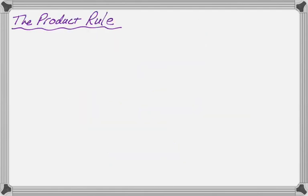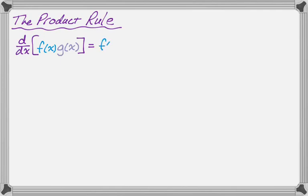We're going to start off with just stating the normal product rule. So the derivative of f(x) times g(x) — f times g is a product, so you have to use a product rule. The way that I remember it: it is the first function times the derivative of the second, plus the second function times the derivative of the first. That's how I've always remembered it.